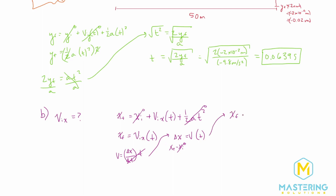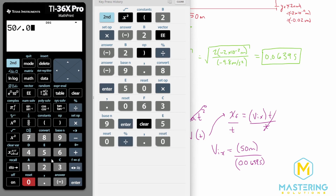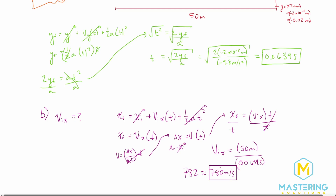Using x final equals v_ix times time, we divide both sides by time. So v_ix equals x final divided by time: 50 meters divided by 0.0639 seconds, which gives us an initial bullet velocity of 782 meters per second, rounding to 780 meters per second. You can plug in the full value and let Mastering Physics round it, or round yourself — either way, the answer is 780 meters per second for the initial velocity out of the barrel.